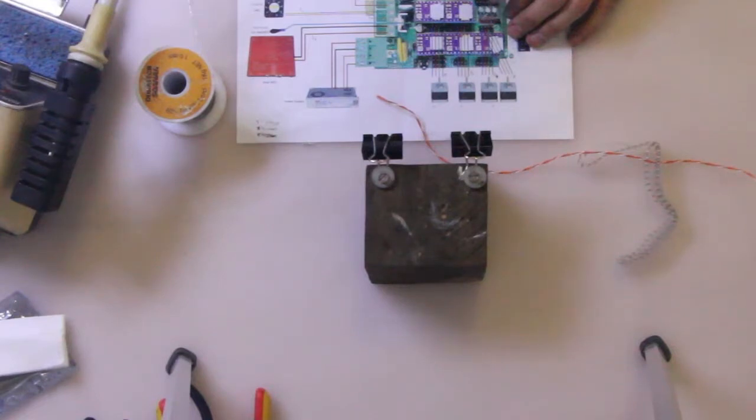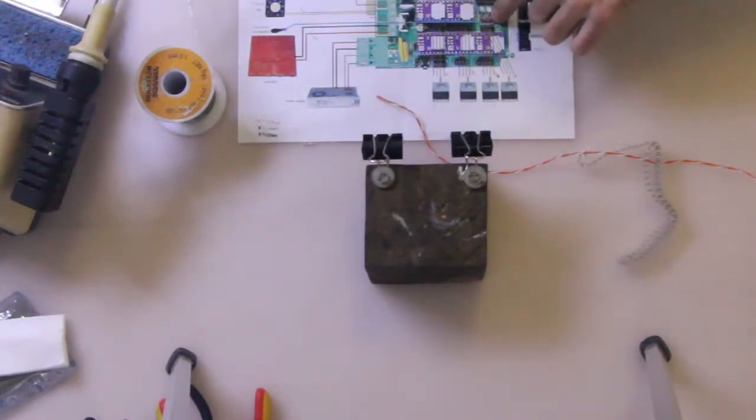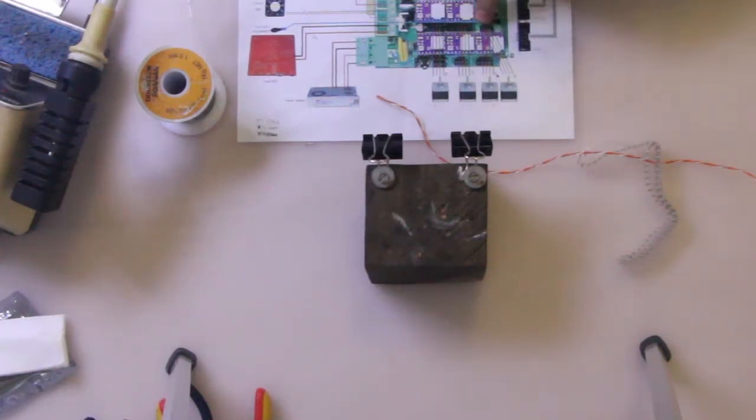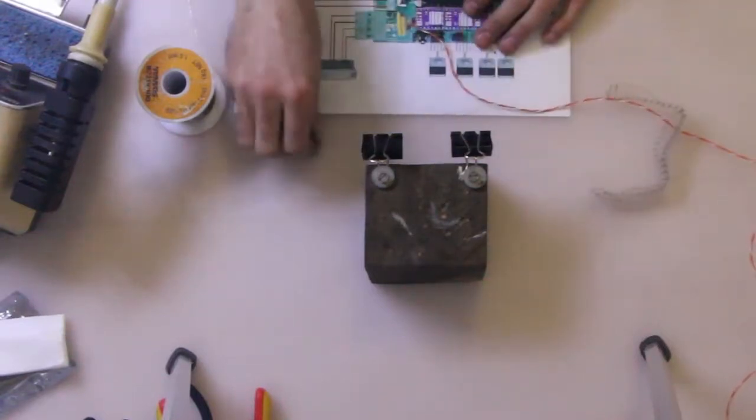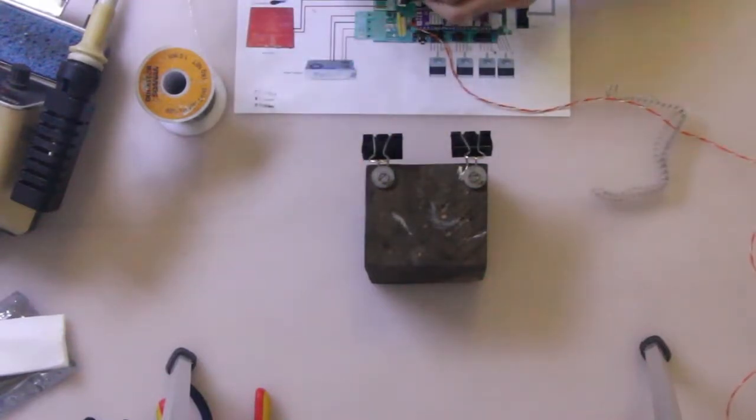To the ones coming off the heat bed. So these are the pins. These two headers on the right are for the heat bed and the first two on the left are for the hot end. So we're going to do the heat bed ones with this orange wire, so grab one of your crimps.